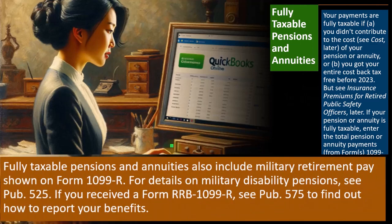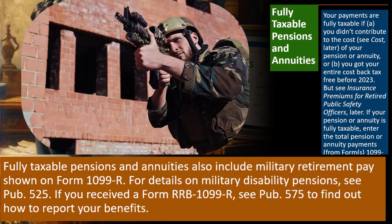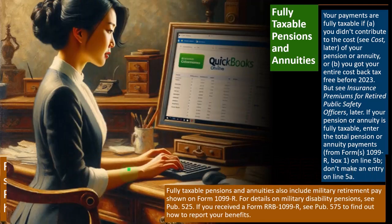You're going to put it in line 5B, representing that it's going to be taxable, hopefully reflected clearly on Form 1099-R. Fully taxable pensions and annuities also include military retirement pay shown on Form 1099-R. For details on military disability pensions, see Publication 525. Military is often a specialty area with a lot of exceptions. If you receive a Form RRB 1099-R, see Publication 575 to find out how to report your benefits.